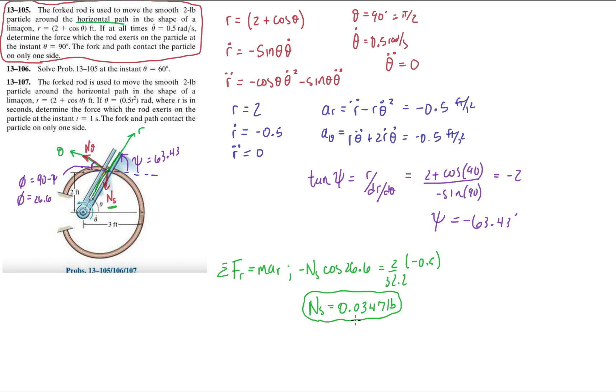Now, why did I solve for that? I didn't need to. They're asking for n theta. Well, in order to get n theta, we're going to need to know this value. So let's do the equation of motion along the theta direction. That's going to be n theta. If cos 26 was the radial component, then sin 26.6 is going to be the theta component. So it's going to be minus ns sin 26.6 equals 2 over 32.2 times a theta, which is minus 0.5 as well. Move everything to one side, and we should end up getting a value of n theta is minus 0.0155 pounds.